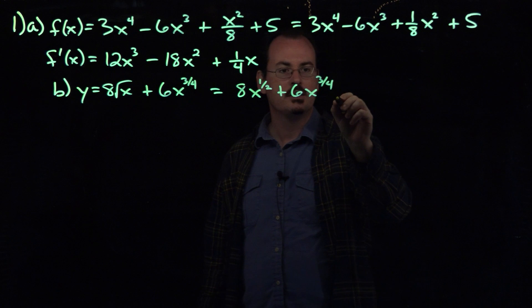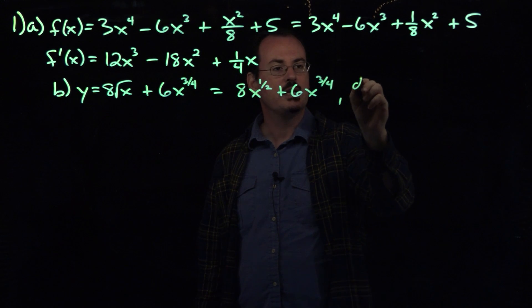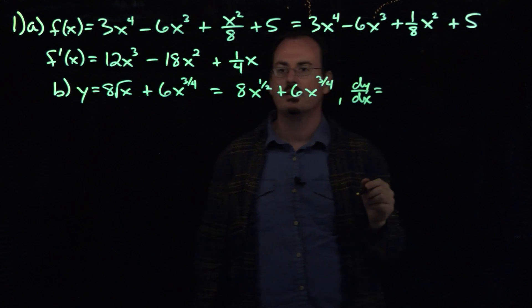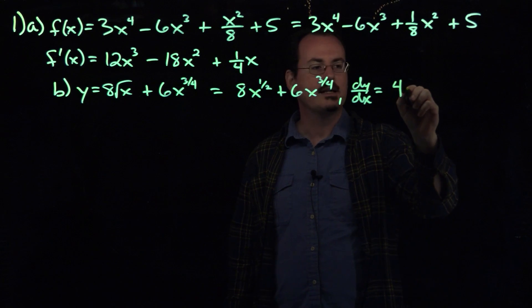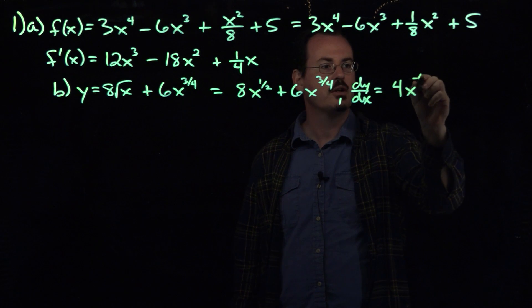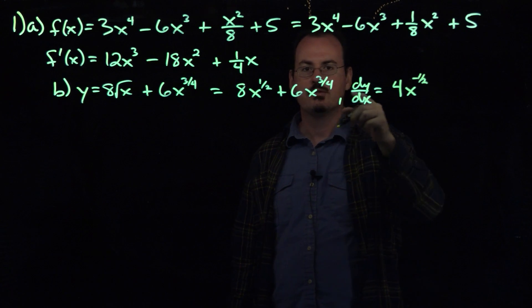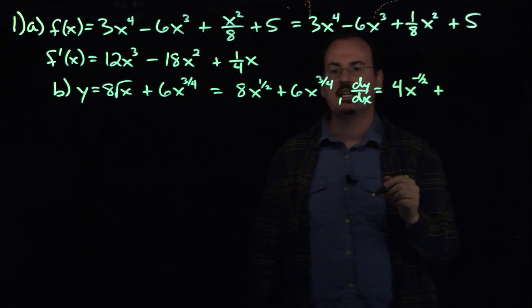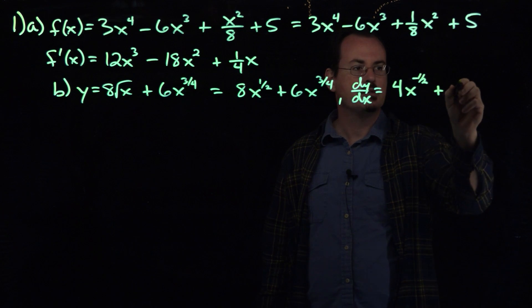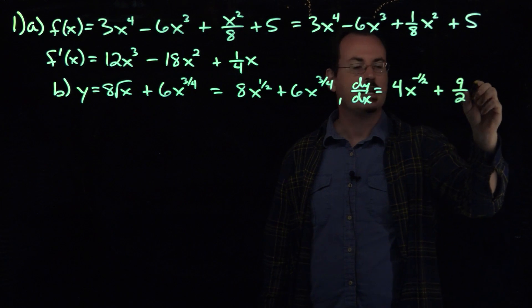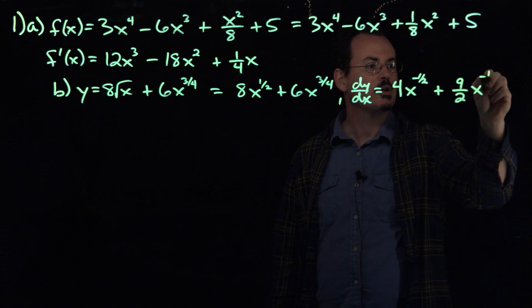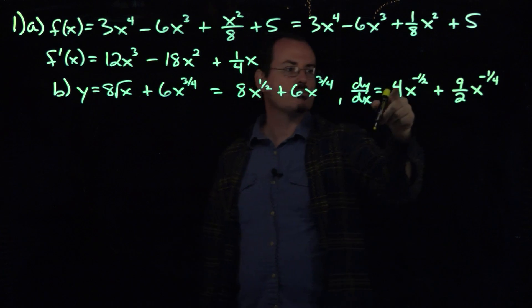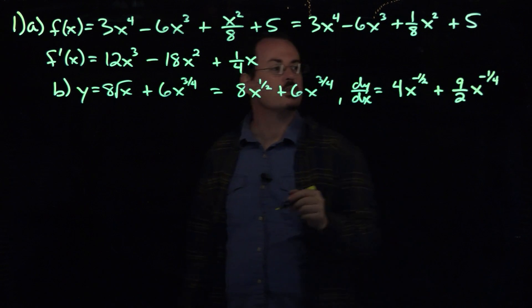I'm going to try to squeeze the derivative right here. So then the derivative dy/dx by the power rule: take the 1/2, put it in front — 1/2 of 8 is 4 — so we're going to get 4x to the negative 1/2 power, lowering the power by 1. For this one, we'll multiply the 3/4 by the 6, giving us 18/4 which is 9/2. So we'll get 9/2 x to the negative 1/4 power. And if you wanted to write this with positive exponents or roots, you could do that.